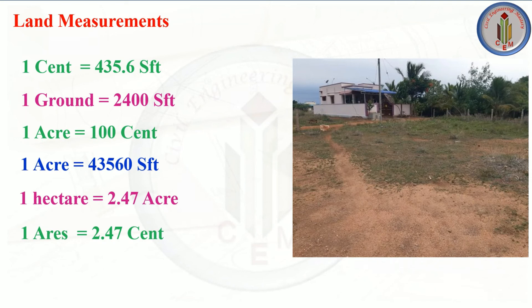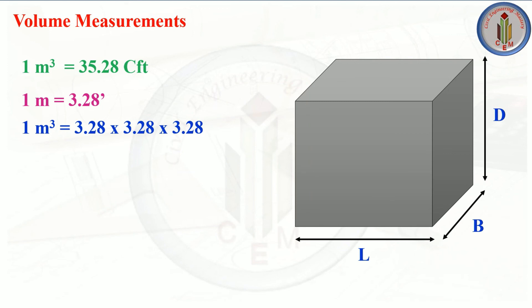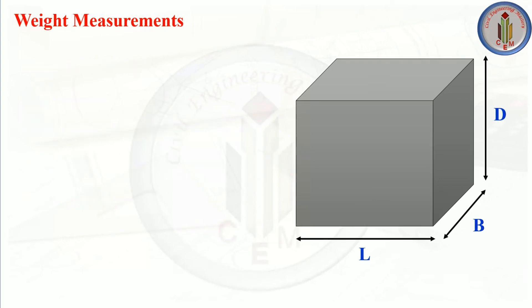For volume measurements: 1 meter cube = 35.28 cubic feet (since 3.28 × 3.28 × 3.28 = 35.28 CFT). 1 cubic meter also equals 1000 liters.